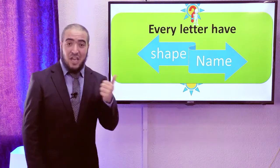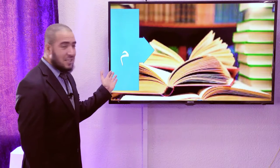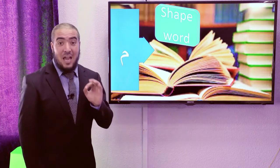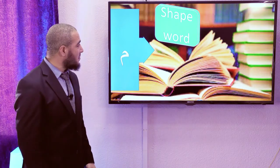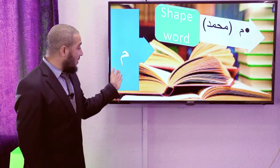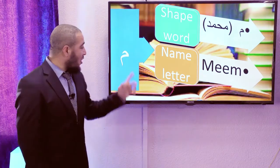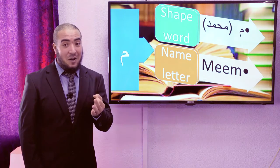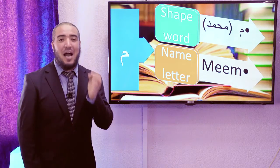Every letter has a shape and a name. For example, what is this letter? Meem. This Meem has a shape. When you pronounce or read a word, you read the shape. What is this word? Muhammad. What about the first letter? Our letter — Meem. Now, when you pronounce a separated letter, you read 'meem,' but when you read it in the word, you read 'mo' — Muhammad.